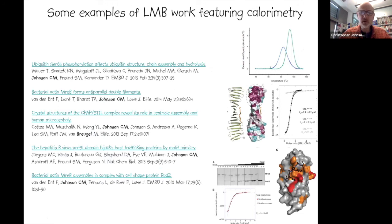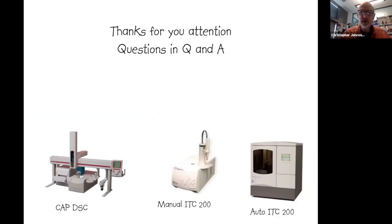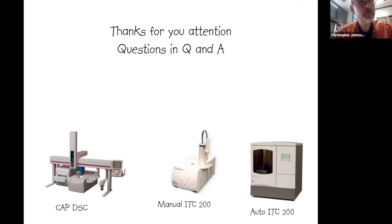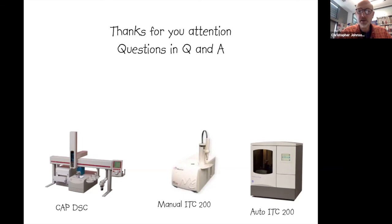There are papers from work that features calorimetry which you can find if you review the talk on the YouTube channel. Regarding sample requirements for ITC: the protein in the cell requires ~350 µL at 20–40 µM concentration; the syringe component requires ~70 µL at 200–400 µM (10–20× more concentrated). ITC can be performed in either direction — if one protein has solubility issues or is difficult to make, put that one in the cell where lower concentrations are required.